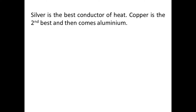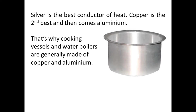Silver is the best conductor of heat; copper is the second best, and then comes aluminium. That's why cooking vessels and water boilers are generally made up of copper and aluminium — silver is the best conductor but it is too costly. Mercury and lead are the poorest conductors of heat.